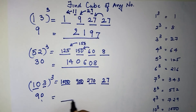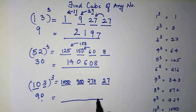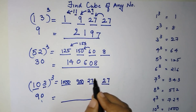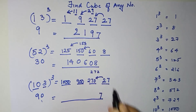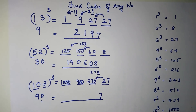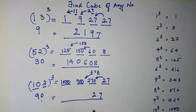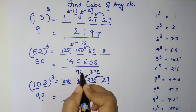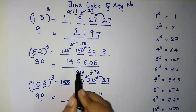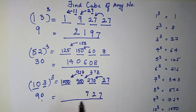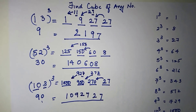Again we use the units place method. The units digit of 270 is 7, and 2 left over gets added to 270 giving 272 — units digit 2, so 27 gets added to 900 giving 927. Units digit is 7, and 92 left over gets added to 1000 giving 1092. So 103³ = 1092727.